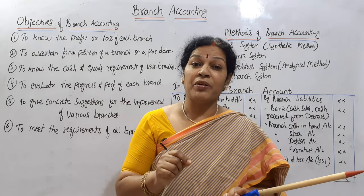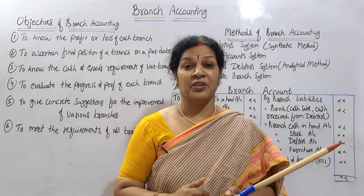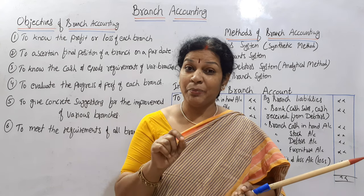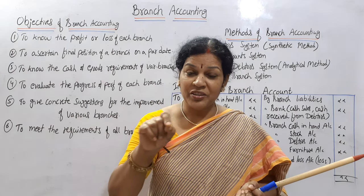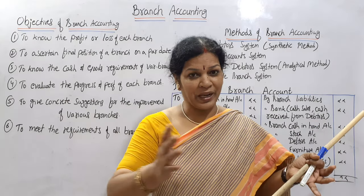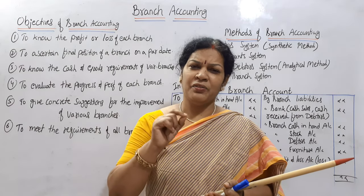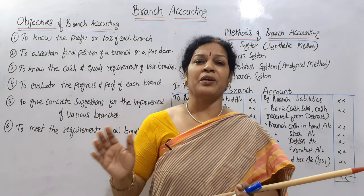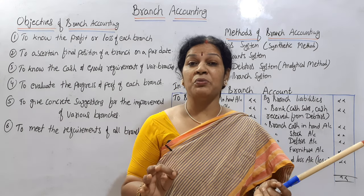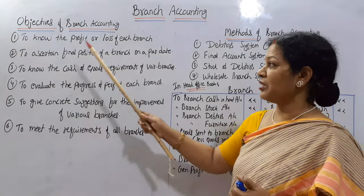At the same time, they need to be very careful about the performance of each and every branch — what is going on, what are the requirements, how it is running, whether it's going towards profit or loss. Everything is taken care of by the head office. The head office has total command, but branches work under its headship. So at this juncture, every head office maintains separate accounts for every branch to know the performance of each — that is what branch accounts are.